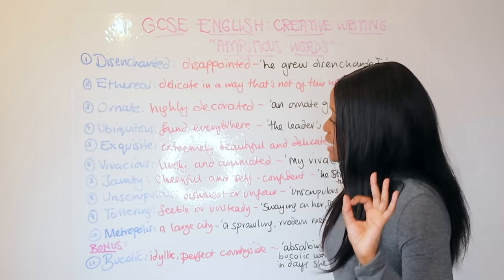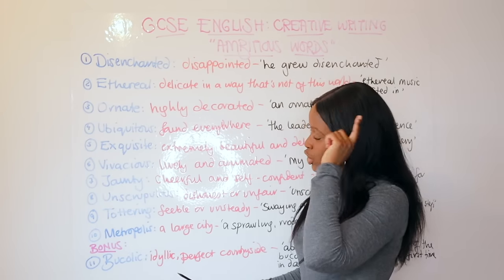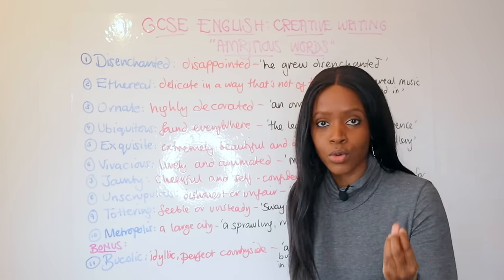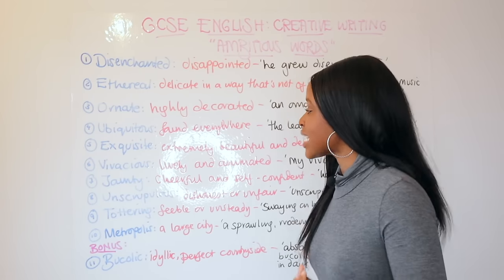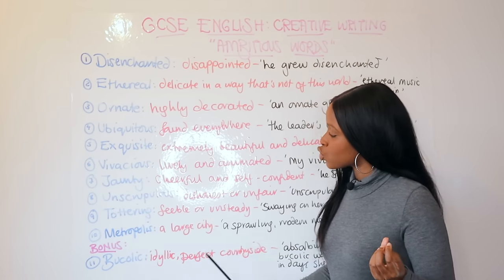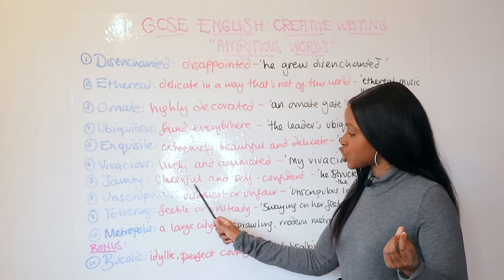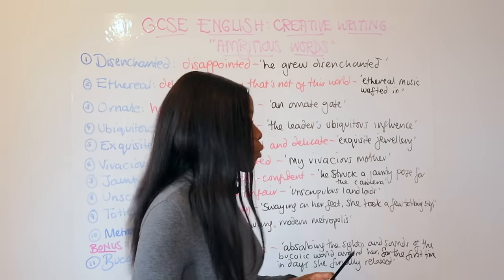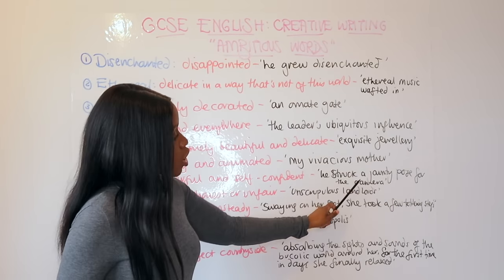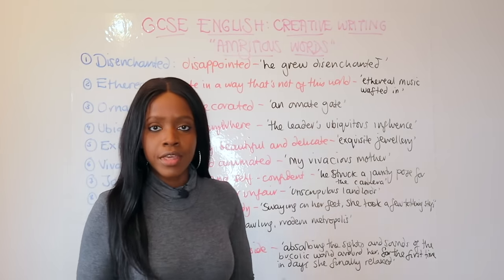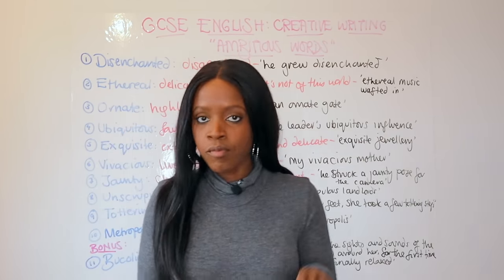The seventh ambitious word you can use in your stories is 'jaunty,' which means cheerful and self-confident. For example: he struck a jaunty pose for the camera.